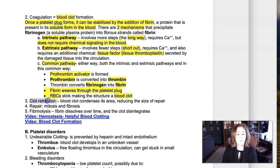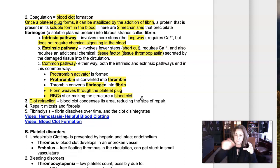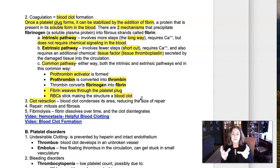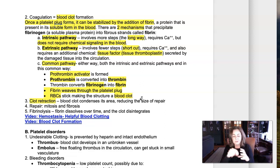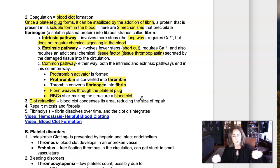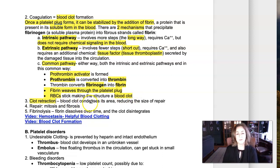Once you have a blood clot, clot retraction will occur. The platelets adhere to the fibrin weaving through and pull it in tighter. Think of it like this: if you had a cotton ball — representing red blood cells and platelets — and you weaved thread through it like fibrin, you could then pull the two ends of the thread as tight as possible and shrink the cotton ball down to a really dense, smaller area. That's clot retraction — the blood clot reduces its size, which reduces the space of repair needed.